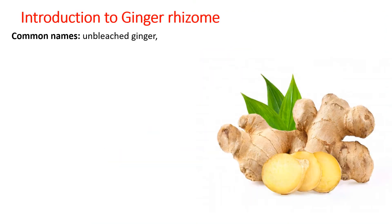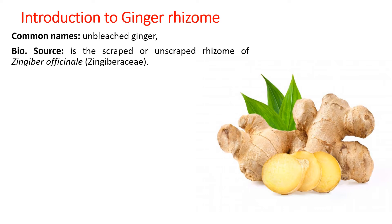Ginger is generally known as unbleached ginger in the European Pharmacopoeia. It is obtained either as scrapped or unscrapped rhizomes of Zingiber officinale, belonging to the family Zingiberaceae. Scrapped means peeled and unscrapped means unpeeled rhizomes. If the skin is taken out, it is called scrapped ginger; if the skin remains intact, it is unscrapped rhizome.